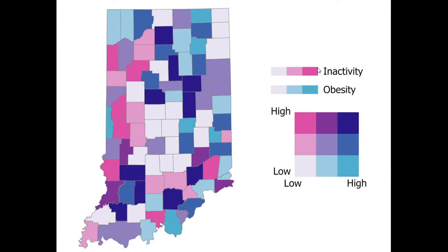Here's where we use colors to show two different variables. In this case, inactivity is shown over here with a magenta-type color ramp in only three classes. Next up is obesity, also three classes. We think of lighter colors as lower values. Areas with low inactivity means they're highly active; areas with high inactivity means they're very inactive. Then we can say these counties are less obese, whereas these counties have higher levels of obesity. Essentially we have two different variables — inactivity and obesity.